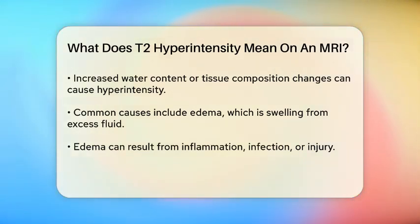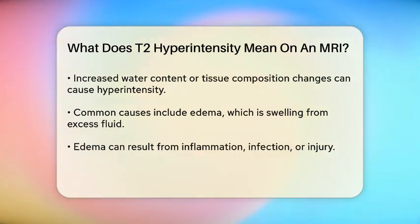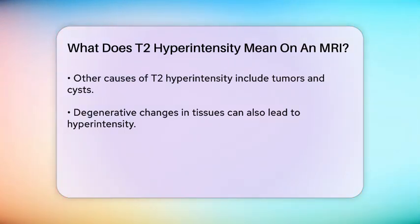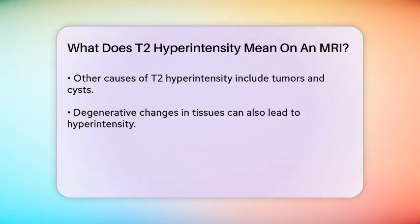Common reasons for T2 hyperintensity include the presence of edema, which is swelling caused by excess fluid. This can occur in various conditions such as inflammation, infection, or injury. Other causes might include tumors, cysts, or degenerative changes in tissues.